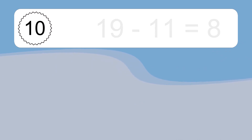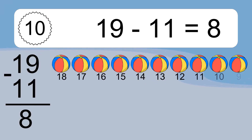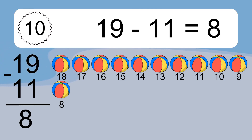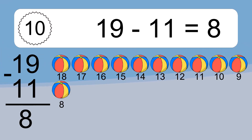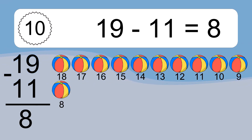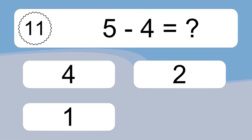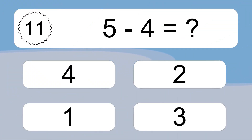19 minus 11 equals what? 19 minus 11 equals 8.